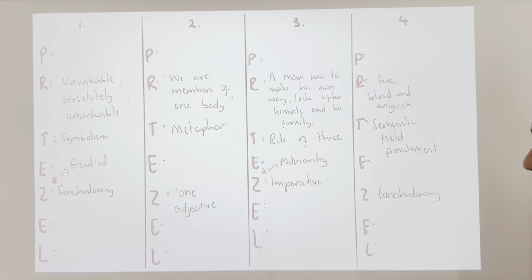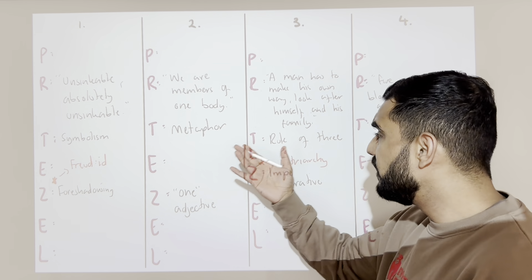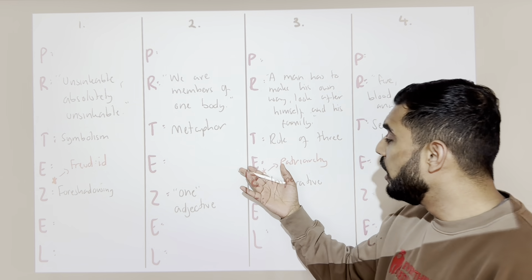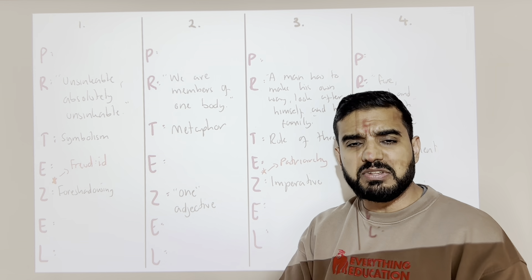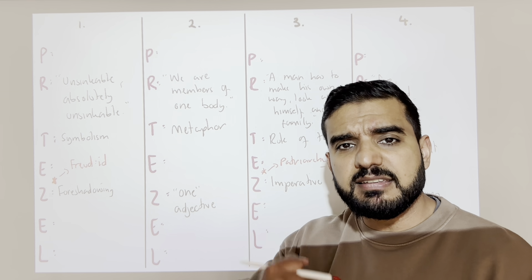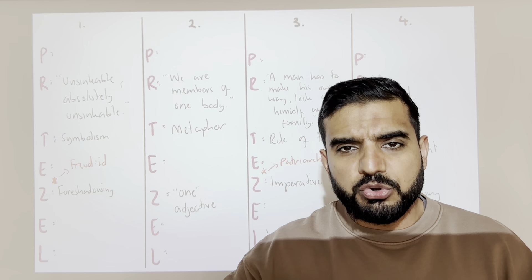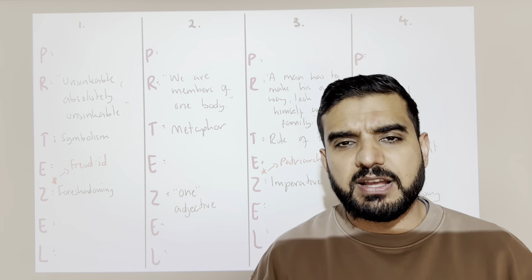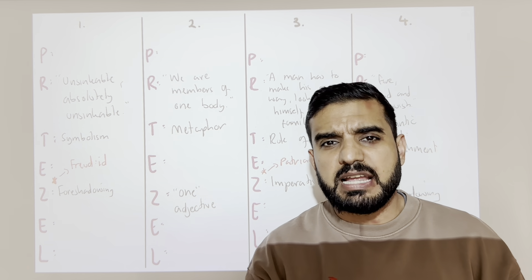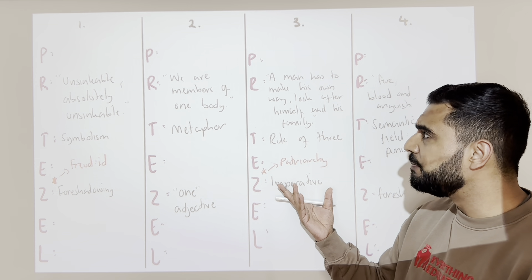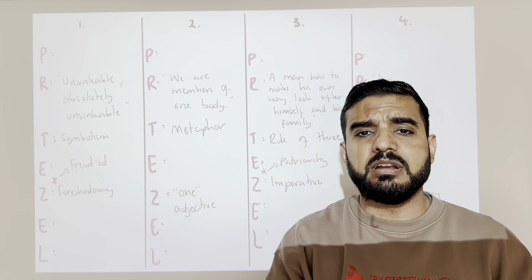Third one — it's a very famous quote: 'A man has to make his own way, look after himself and his family too, of course.' The technique here is the rule of three. We're going to talk about the patriarchy — it shows how Mr. Birling really believes that what makes a man a man is his ability to be a powerful capitalist. Your ability to be powerful for yourself determines how much of a strong patriarchal man you are. Zooming into the imperative: 'a man has to make his own way' — this is not up for debate. It's a command by Mr. Birling.